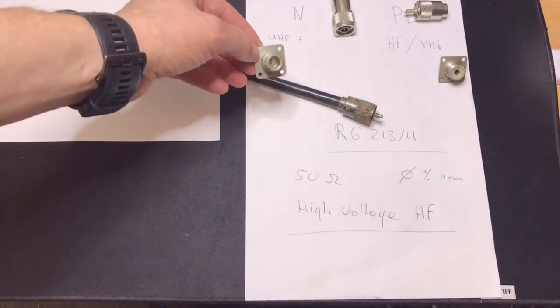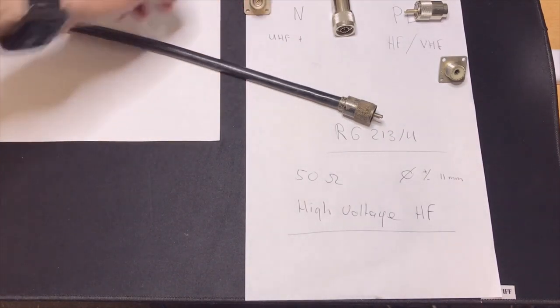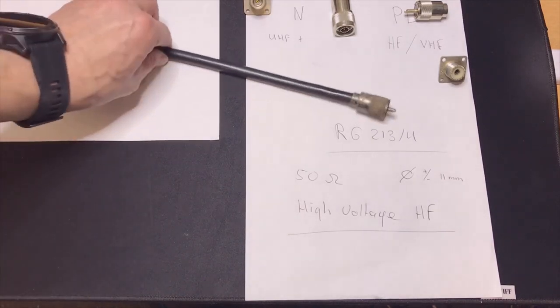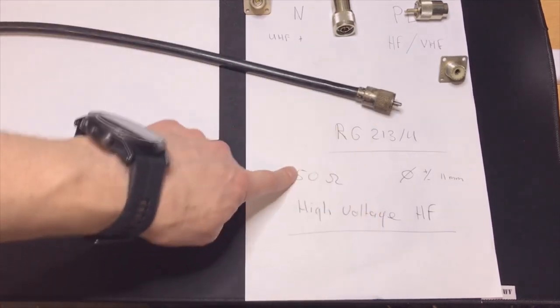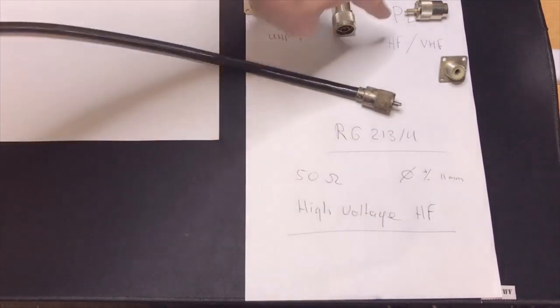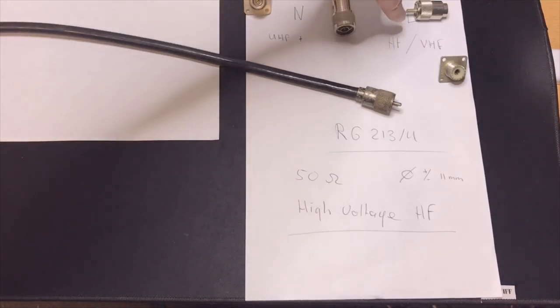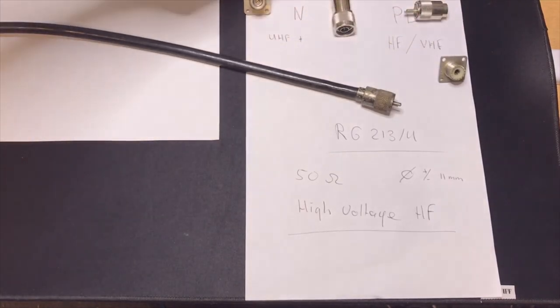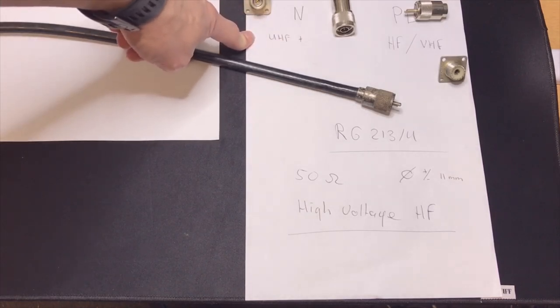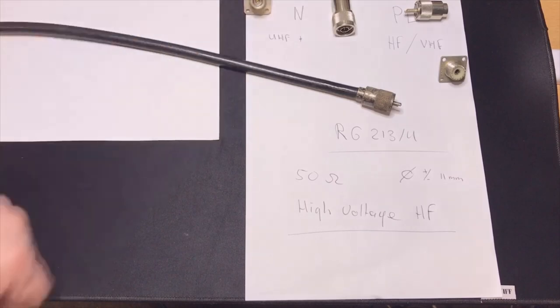So you use this cable RG213, 50 ohms, for the HF and VHF. You can use the PL and you would use preferably for UHF or higher the N connectors.